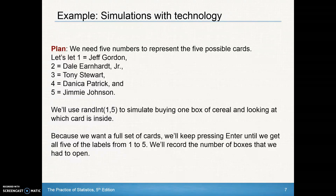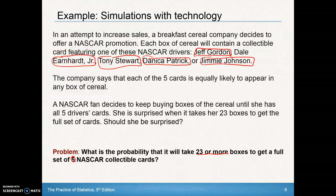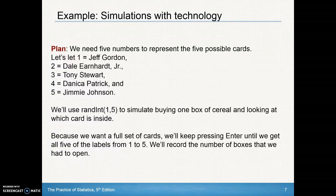Here's our plan. We need five numbers to represent the five possible cards. We'll assign one to Jeff Gordon, two to Dale Earnhardt, three to Tony Stewart, four to Danica Patrick, and five to Jimmy Johnson. We can use the randint(1,5) command on our calculator to simulate buying one box of cereal and seeing which card is inside. We keep pressing that until we get at least one of each number.